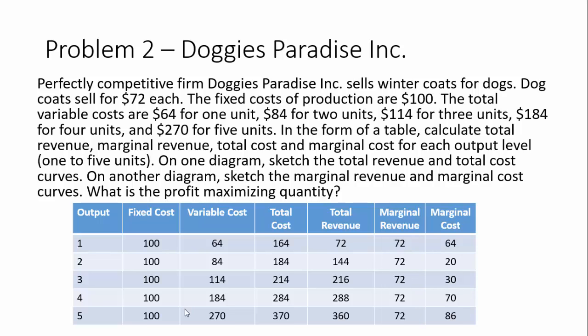Let me show you the marginal revenue and marginal cost. Marginal revenue is the price, and marginal cost is the change in total cost divided by the change in output. Looking at our data, we can see where our profit maximization point is going to be — where marginal cost equals but does not exceed marginal revenue. That's going to be right around output of four again.